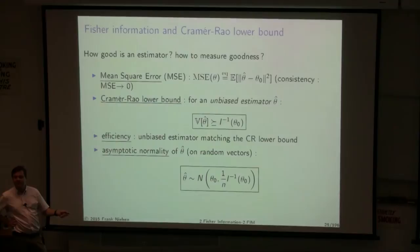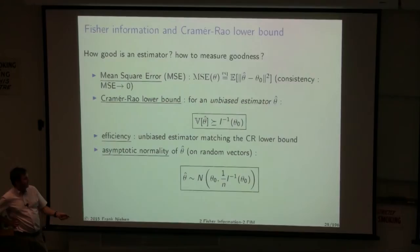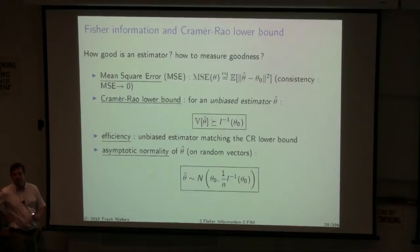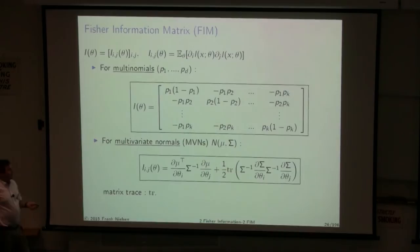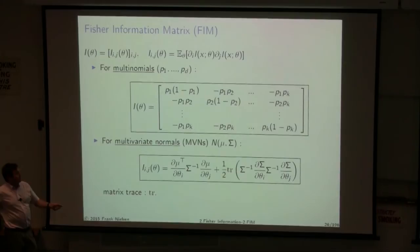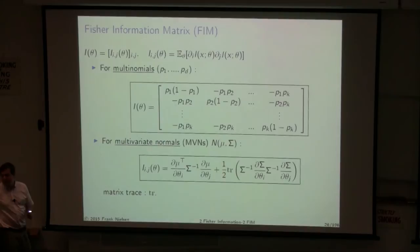For the multinomial discrete distribution — a point in the probability simplex — the Fisher information matrix has a specific form. For multivariate normals, the Fisher information matrix coefficients can be written explicitly. The Fisher information matrix transforms covariantly under reparametrization: if we change from θ to η, the new Fisher information matrix is related to the old one via the Jacobian matrix. This is what we call covariance under reparametrization.